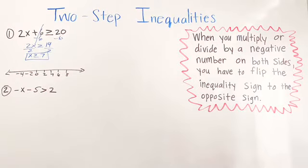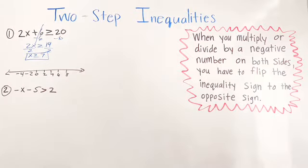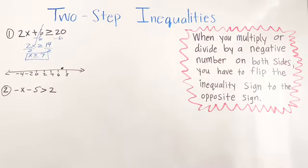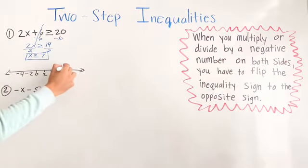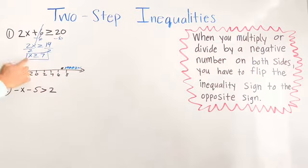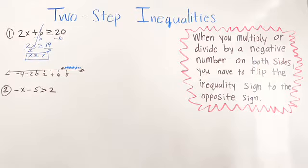We're going to look at our number, which is 7. Is it going to be an open circle or a closed circle? Remember, if it's greater than or equal to or less than or equal to, it's always going to be a closed circle. So put the point at 7. Now, are you going to shade to the left or to the right? Shade to the right because 8, 9, and so on are greater than or equal to 7.